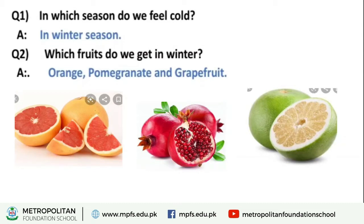Pomegranate means 'anar' and grapefruit we call 'chakodra.' As you can see the pictures: the first picture shows orange, the second picture presents pomegranate, and the third picture shows grapefruit. These are the fruits we get in winter — orange, pomegranate, and grapefruit.